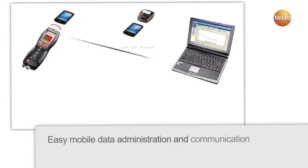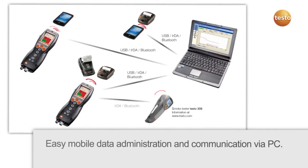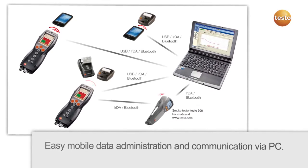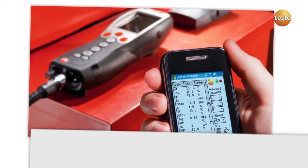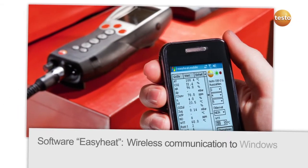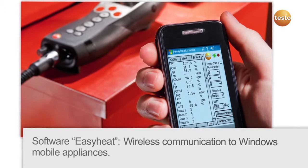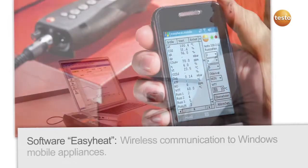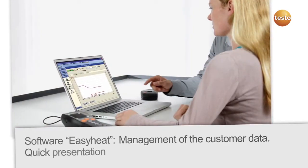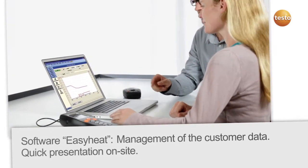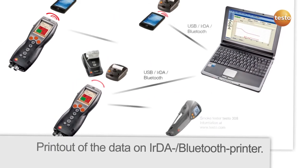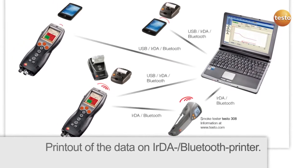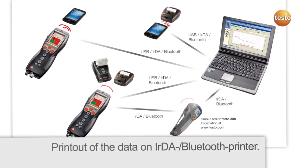The Testo 330LL communicates with PC and Testo 308 smoke testers. Software packages give you the possibility of adapting the Testo 330LL to your communication needs and enable the presentation of results for the customer. The printout of data from a PC or a pocket PC takes place directly via the IRDA or Bluetooth printer.